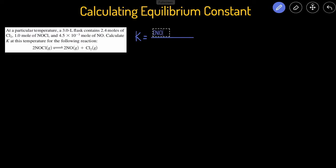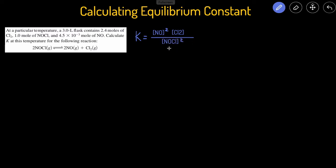For the product side, we have NO raised to the second power because there's a coefficient of 2, times the concentration of Cl₂. On the reactants side, which goes on the bottom, you have NOCl, and that's also raised to the power of 2. I can't just plug these numbers in because these are moles, and brackets mean concentration, so I first have to convert these into concentration.